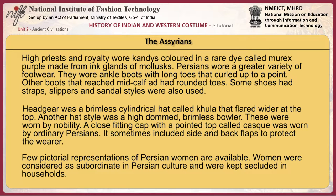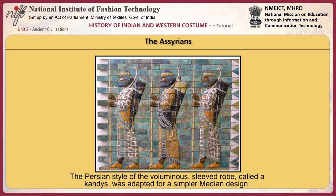Few pictorial representations of Persian women are available. Women were considered subordinate in Persian culture and were kept secluded in households. The Persian style of voluminous sleeved robe called a candice was adopted for a similar median design. This elaborate, richly decorated garment was reserved exclusively for the nobility and elite core of warriors called the 10,000 Immortals.